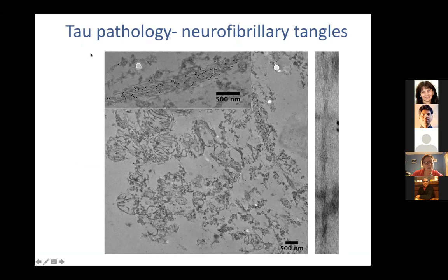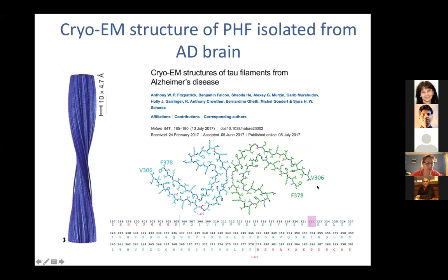Now we're going to switch to tau pathology and neurofibrillary tangles. Again, here is immunogold labelling — this time using an antibody against tau — showing paired helical filaments deposited in the brain tissue of a patient. We were very lucky to actually capture in situ images of paired helical filaments quite clearly in the tissue. I'm sure you're all aware of the cryo-EM structure of paired helical filaments isolated from AD brain, so I won't go over that in a lot of detail.